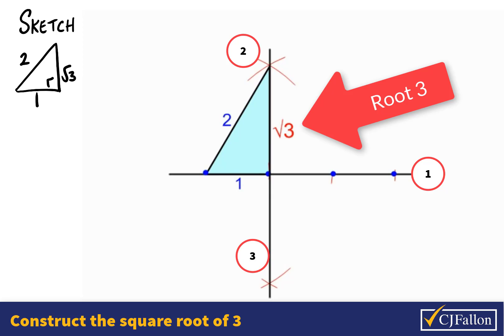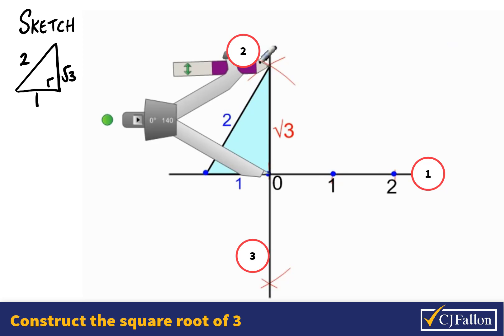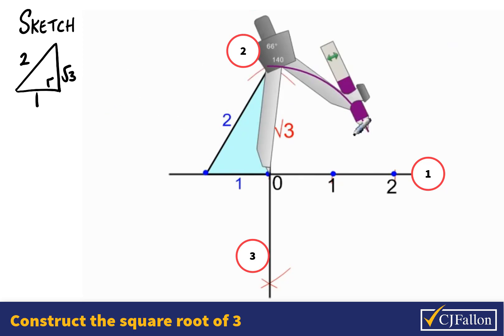We now have a distance of root 3 marked off. I'm going to mark off 0, 1 and 2 along our number line. Root 3 should be between 1 and 2. And I use the compass to bring down this distance of root 3 onto our number line. And I mark off root 3 and that's construction 4.